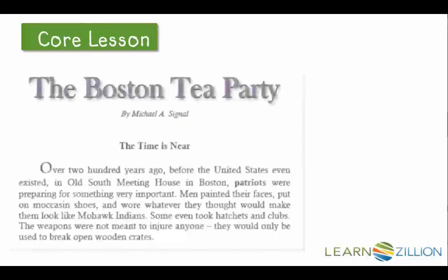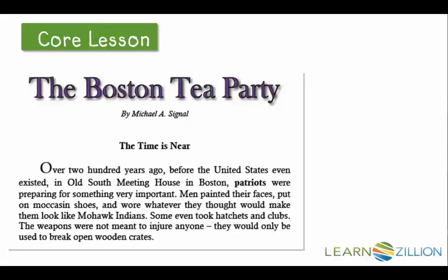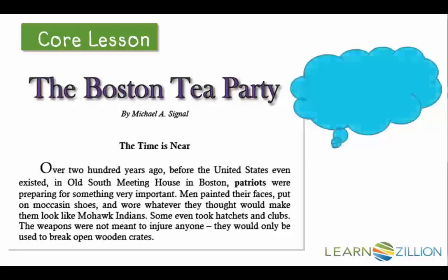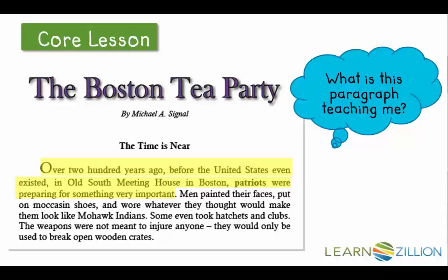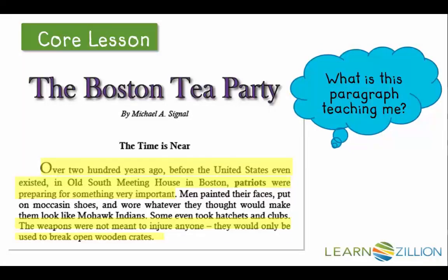There was a lot of information just in that one paragraph. My first step is going to be looking at the first and last sentences and asking, what is this paragraph teaching me? My first sentence is: over 200 years ago, before the United States even existed, in Old South Meeting House in Boston, patriots were preparing for something important. That's a great first sentence because it tells me a lot about patriots. Then I'm going to look at the last sentence: the weapons were not meant to injure anyone — they would only be used to break open wooden crates.